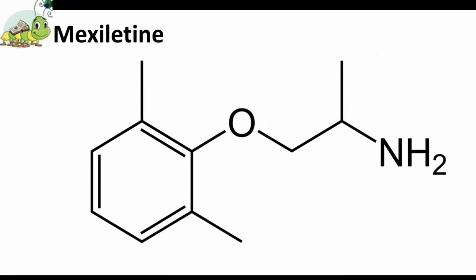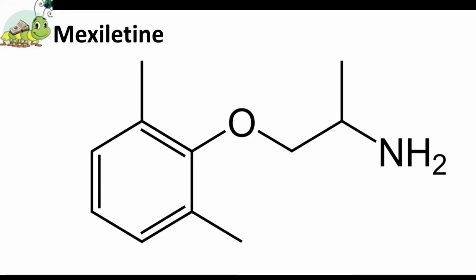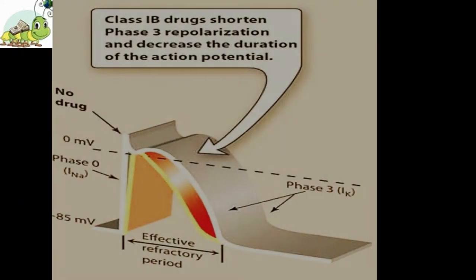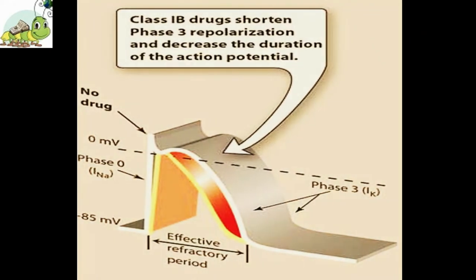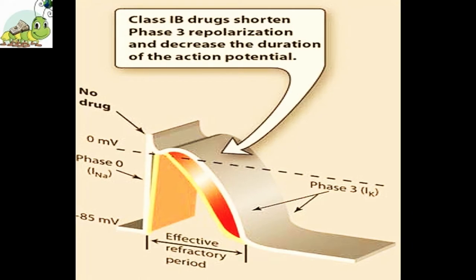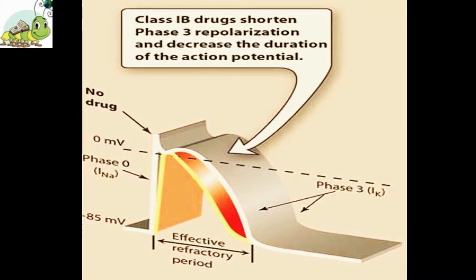Eighth drug: Mexiletine. Mexiletine is an antiarrhythmic agent with pharmacological and antiarrhythmic properties similar to those of lidocaine and tocainide. Like tocainide, mexiletine is available for oral administration only. Electrophysiological actions: As with other members of class 1b, mexiletine slows the maximum rate of depolarization of the cardiac membrane action potential and exerts a negligible effect on repolarization.